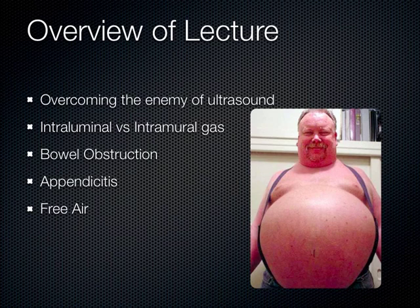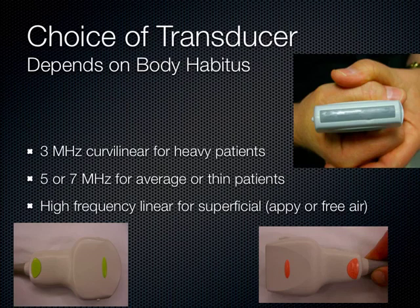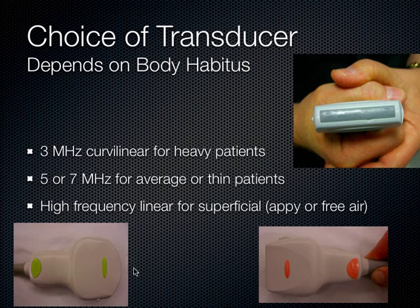You can also see bowel obstructions, appendicitis, and sometimes even free air. When you look at the intestines with ultrasound, you want to use the highest possible frequency for the best resolution, as long as you can penetrate to the depth of interest. Usually on most patients we use the linear probe for appendicitis, which gets us our answer almost all the time because it's high frequency. Occasionally we have to use the lower frequency curvilinear probe down in the 3 megahertz range for larger patients.